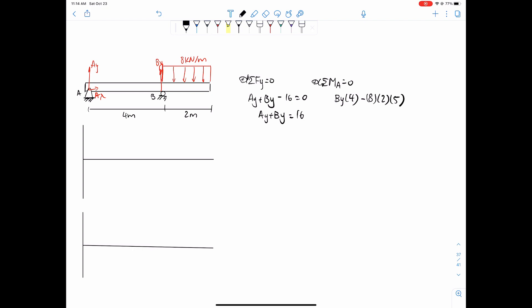5 is because if we replaced this distributed load with a single point load right in the middle, so 2 divided by 2 is just 1 and then this distance is just 5 meters.